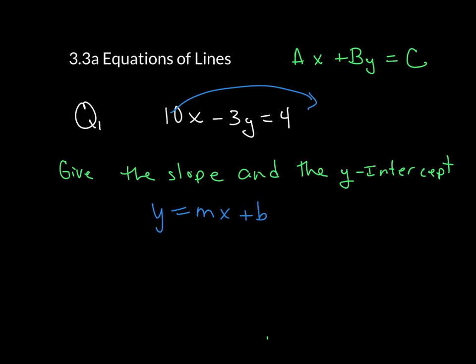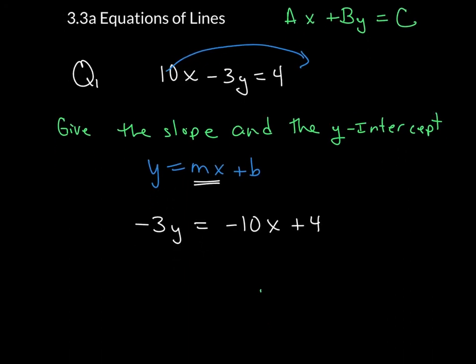You do that by subtracting 10x from both sides, and now you are left with negative 3y is equal to negative 10x plus 4. Notice when I did this, I put the 10x first, because I want to make sure the x term is the first term.